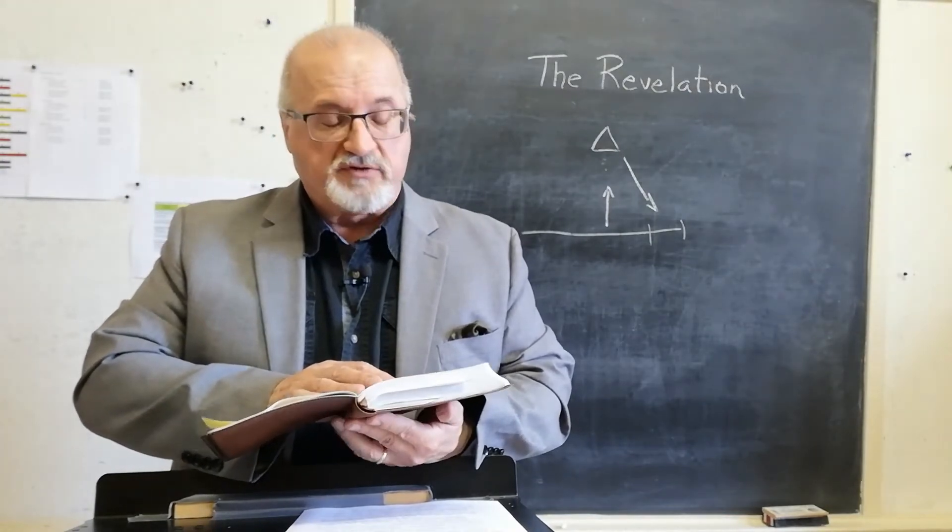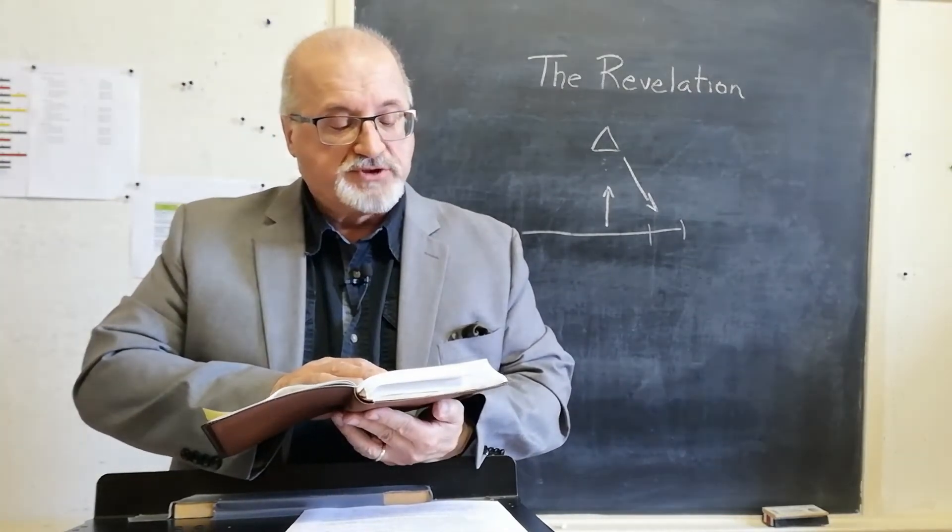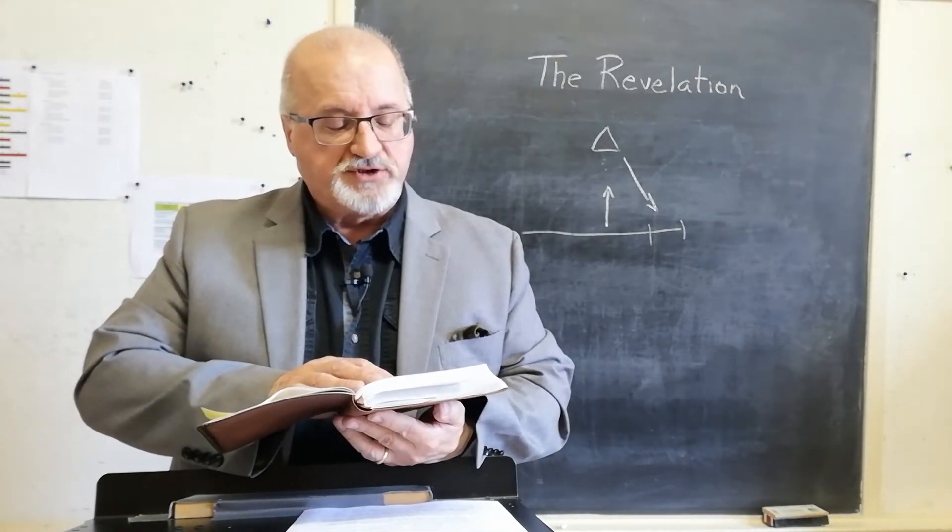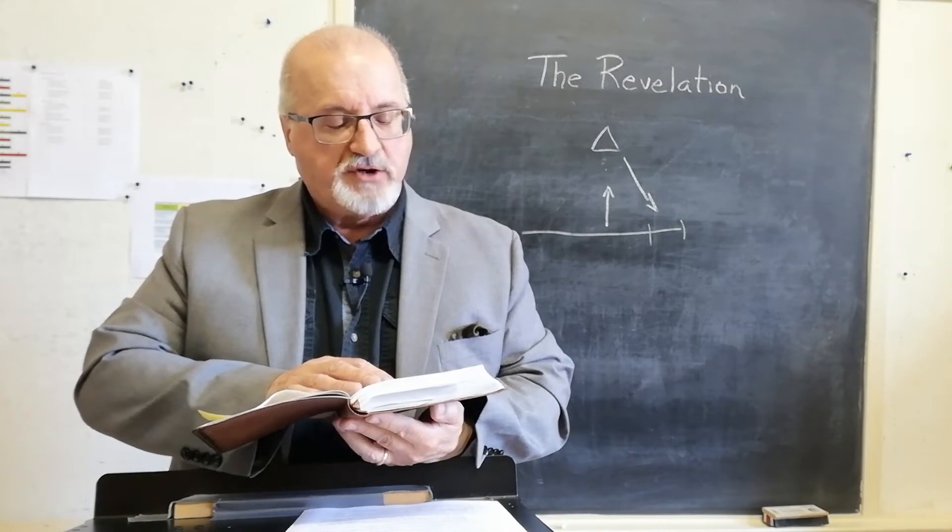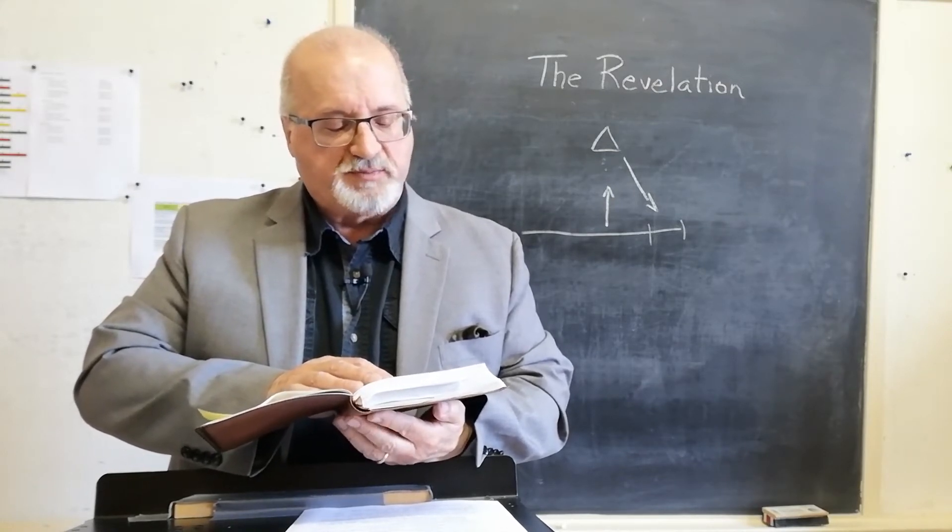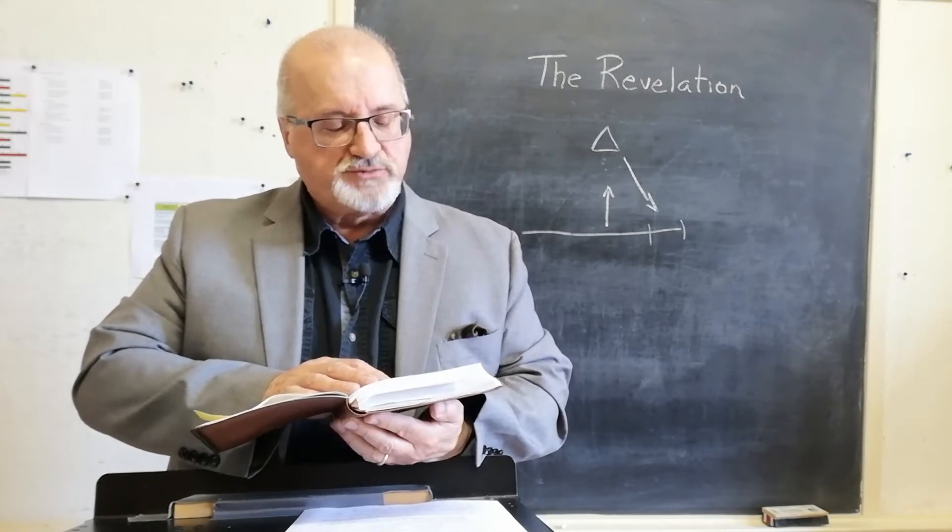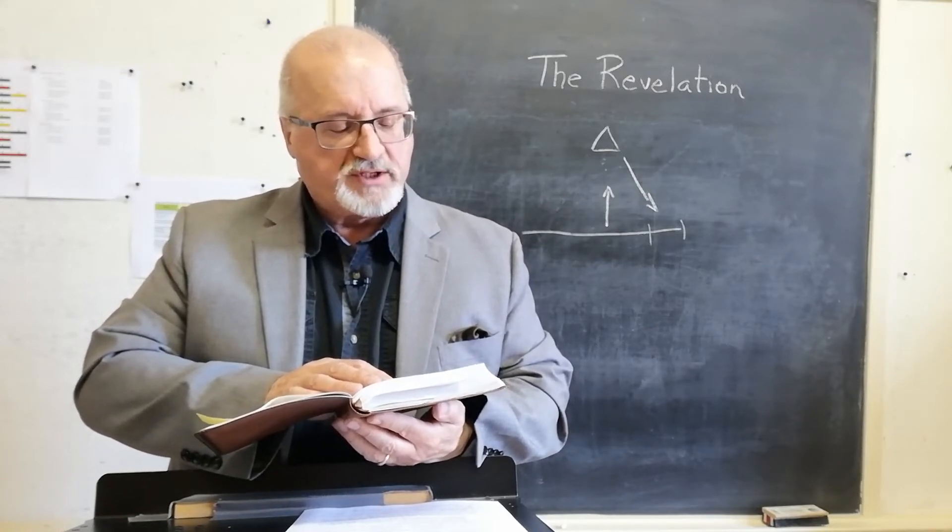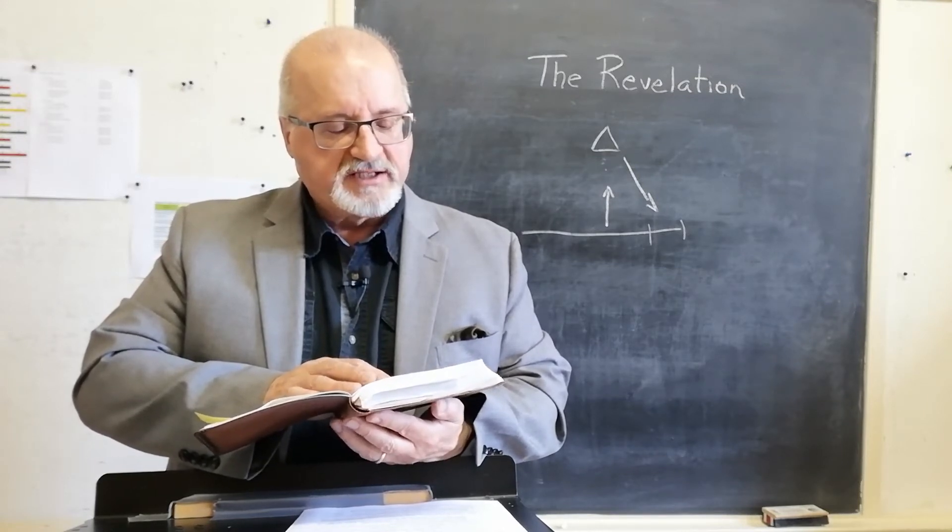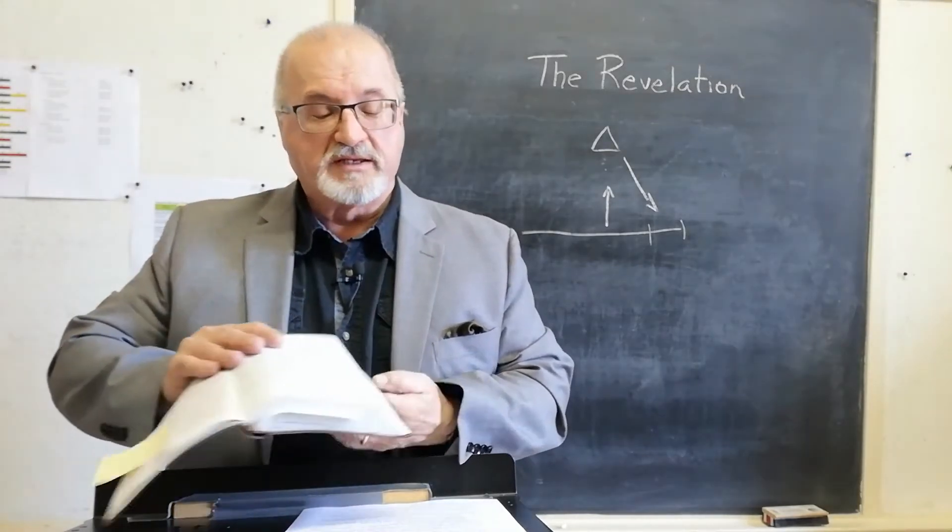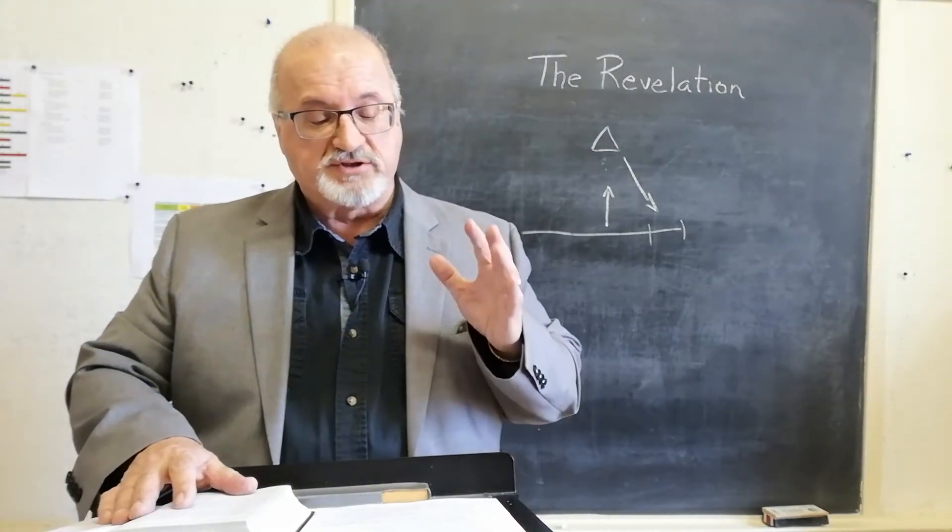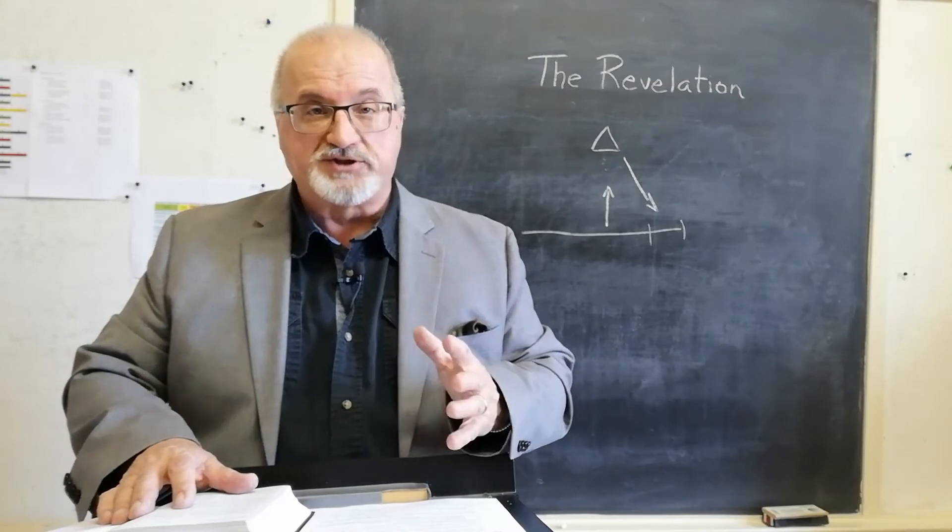And it says, John, here's the beginning of the letter. To the seven churches in the province of Asia, grace and peace to you from him who is and who was and who is to come. And from the seven spirits before his throne and from Jesus Christ, who is the faithful witness, the firstborn from the dead and the ruler of the kings of the earth. Now, there's quite a bit that's in this little part here.